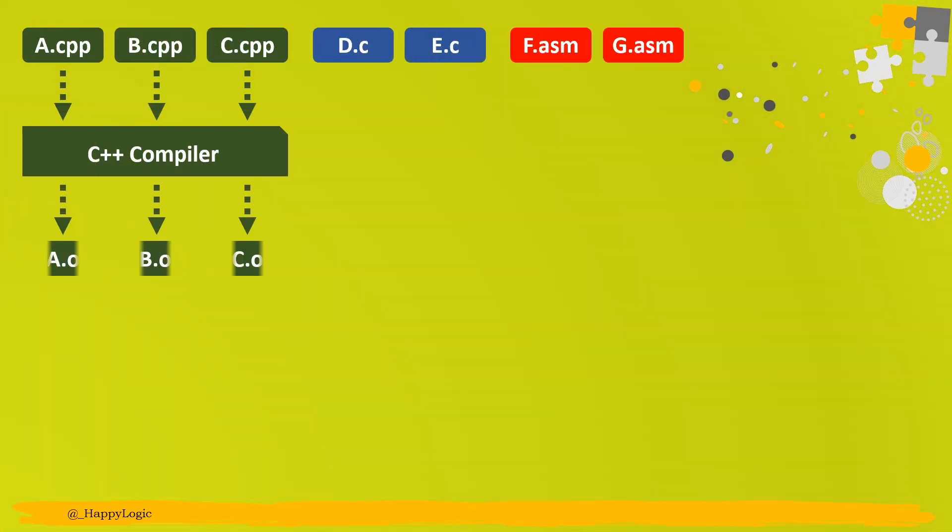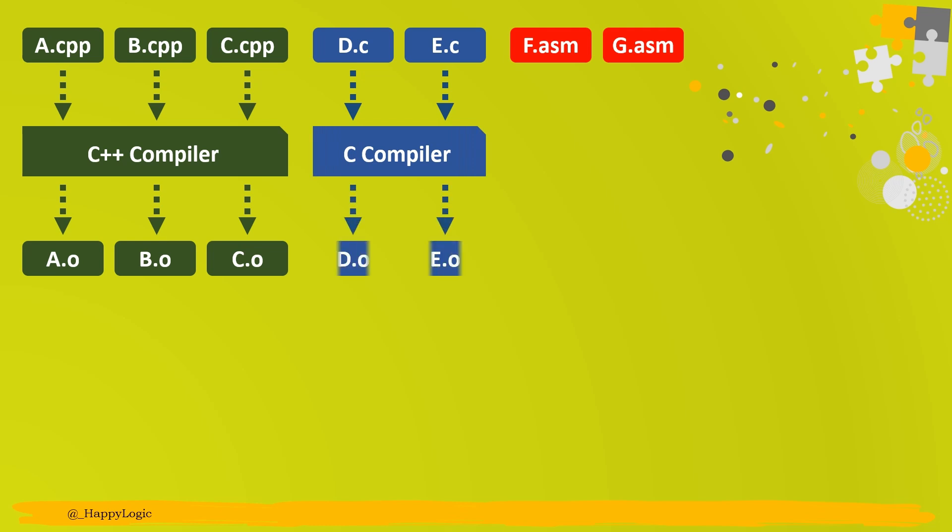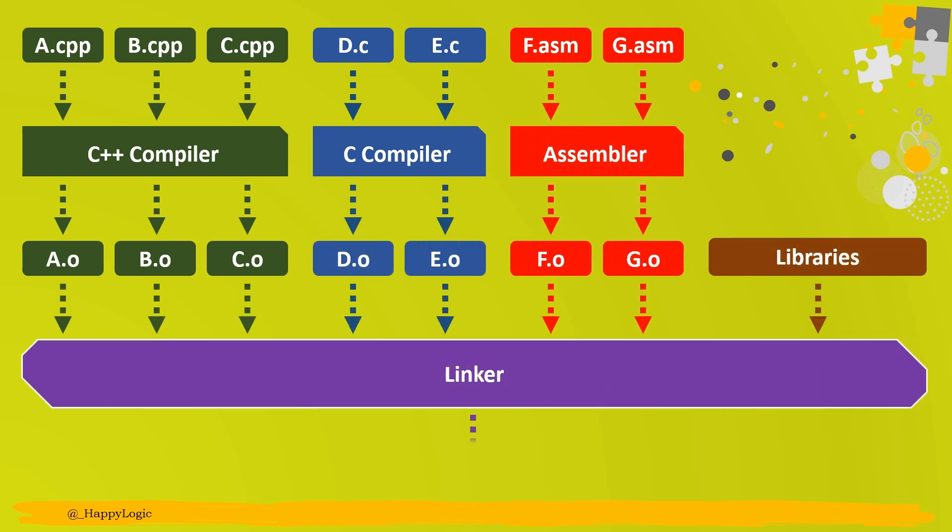First thing that needs to be understood is the compilation process that starts with the source files, including the C++ source files, C source files and the assembly language source files. C and C++ source files are referred to as compilation units and are compiled into respective object files by going through various phases of compilation. Assembly language source files are assembled to their respective object files by the assembler.